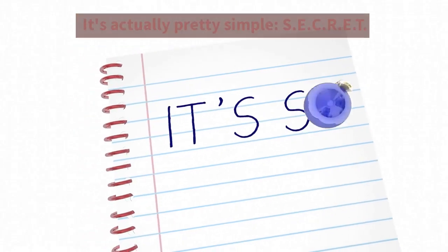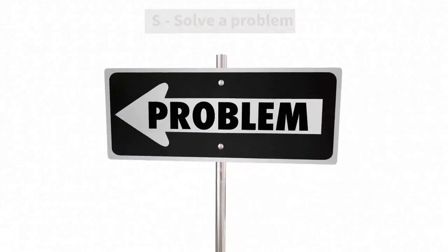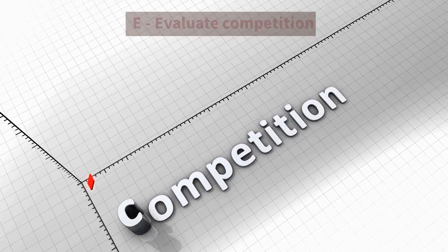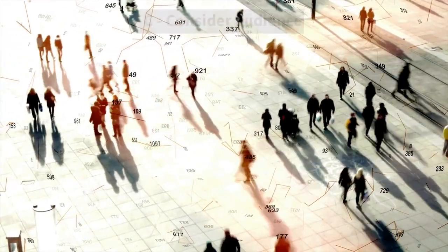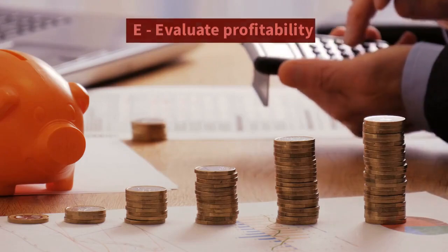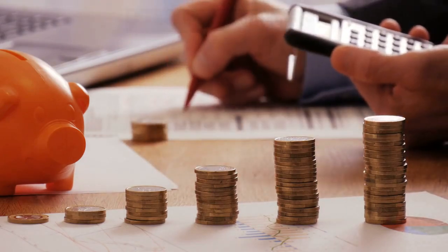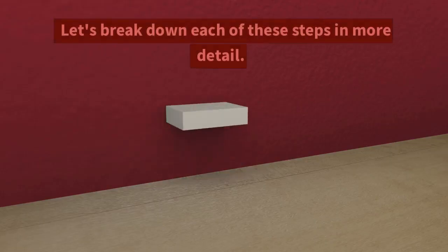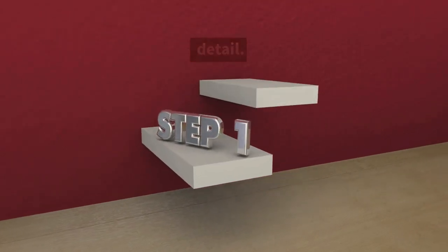It's called SECRET: S - Solve a problem. E - Evaluate competition. C - Consider audience. R - Research demand. E - Evaluate profitability. T - Test and refine. Let's break down each of these steps in more detail.